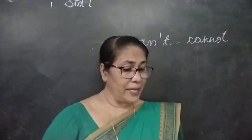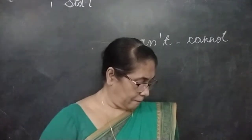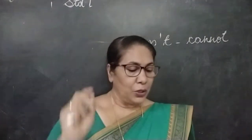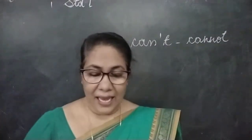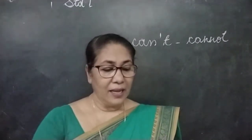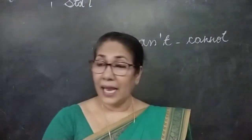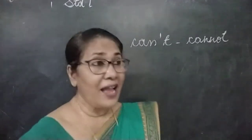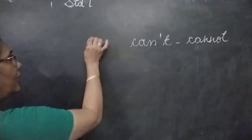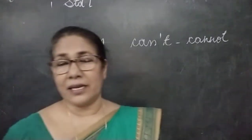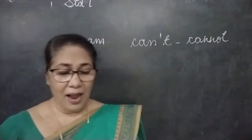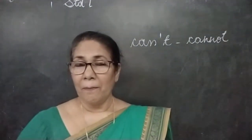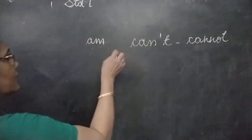Now we are coming to page number 31. Take page number 31. Use am, is, can, or can't — you have to fill it with either am, is, can, or can't. I dash a duck — what you should write there? I am. You must write 'am'. I am a duck. My name is Snowy.